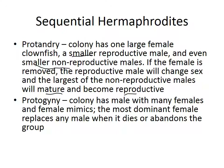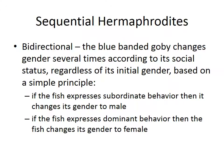That's protandry — where the male becomes a female. In protogyny, the colony has one male with many females and female mimics. If that one male disappears or is eaten, the most dominant female will replace the male and become male. That's protogyny.